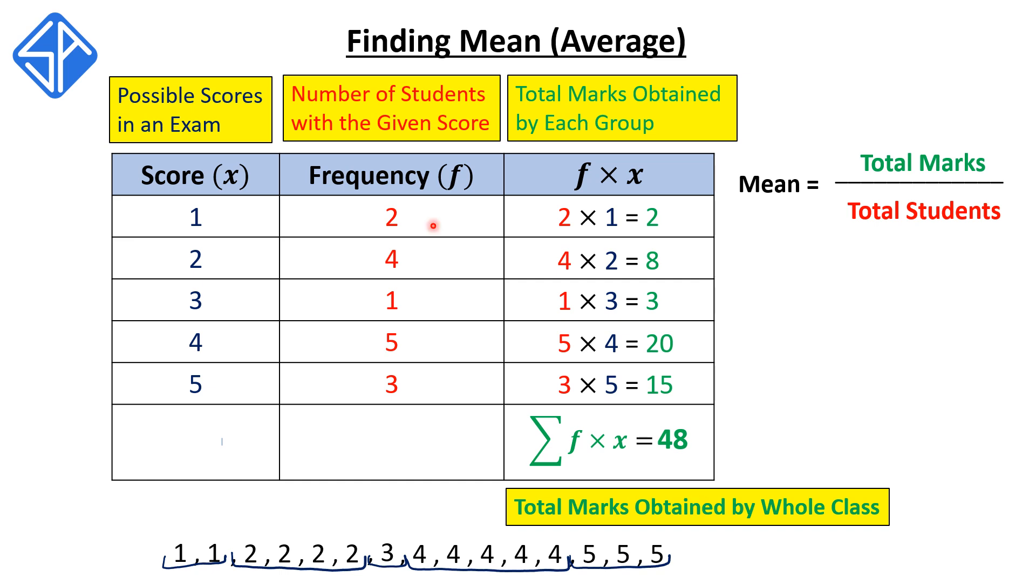Then to find the total number of students, we're going to add up the frequency column. So we have sigma f is equal to 15. This represents the total number of students in the class. So then the mean can be abbreviated to sigma f times x divided by sigma f, which is equal to 48 divided by 15. And upon calculation, we get the mean is equal to 3.2. So this means that on this exam, the average mark of the whole class is 3.2.